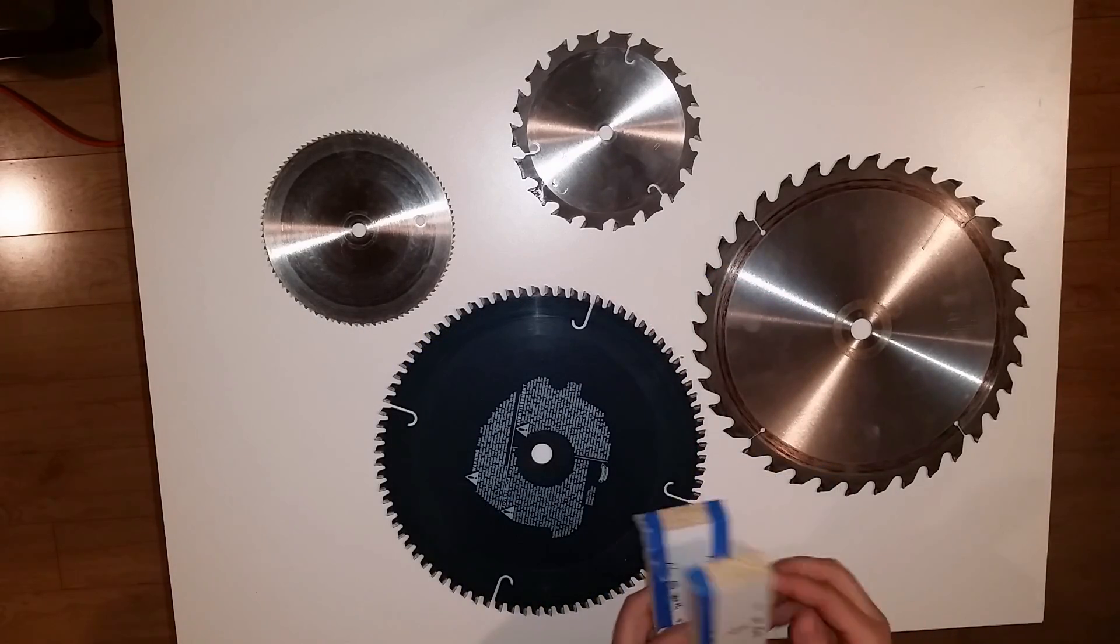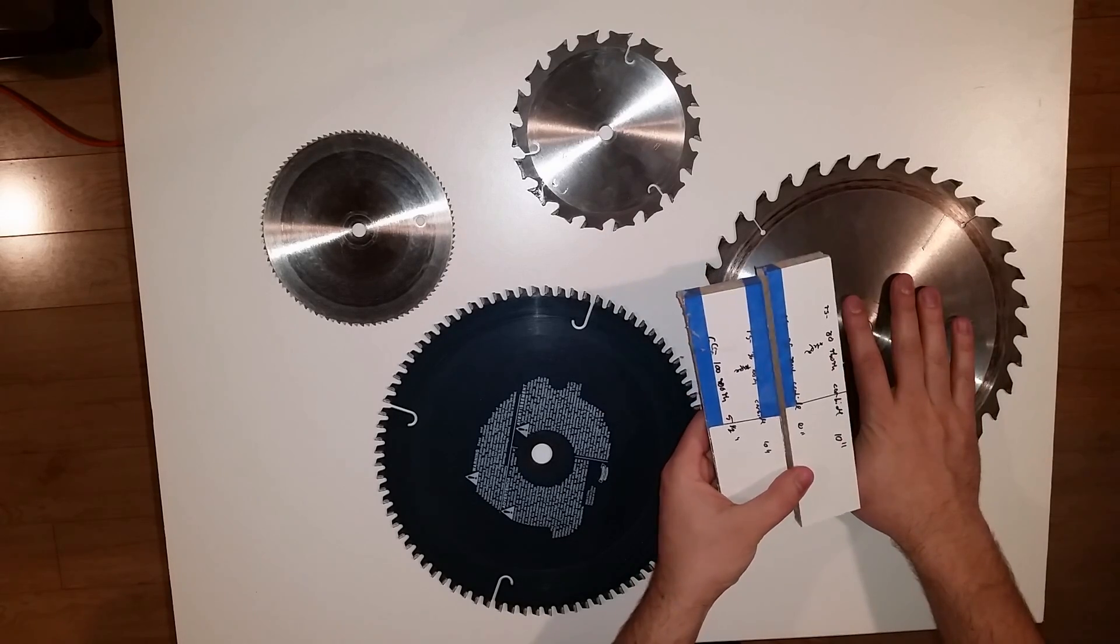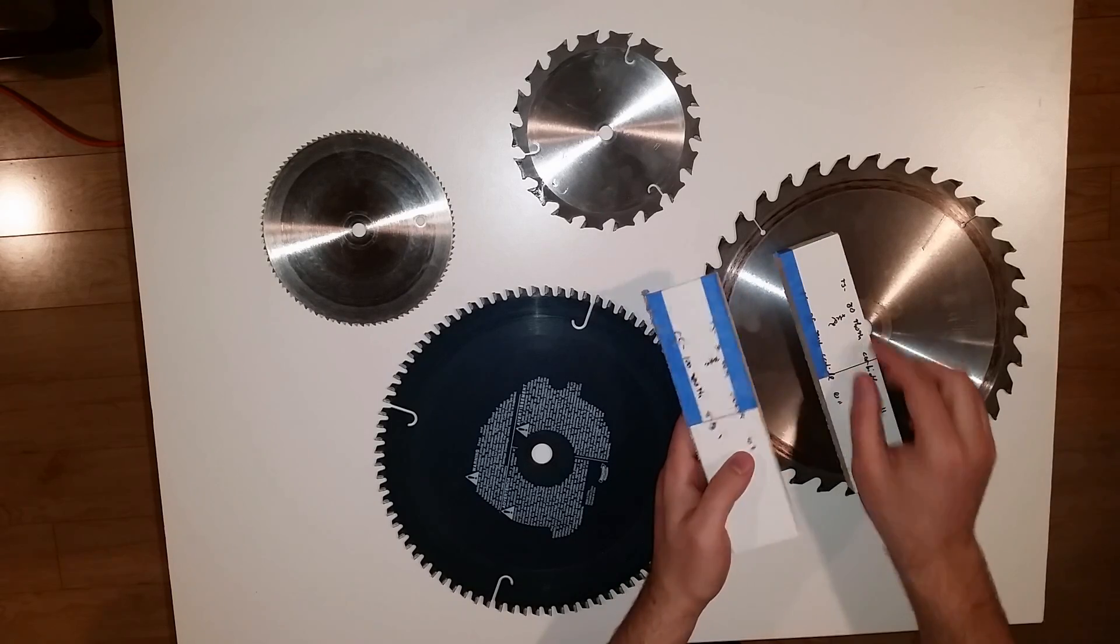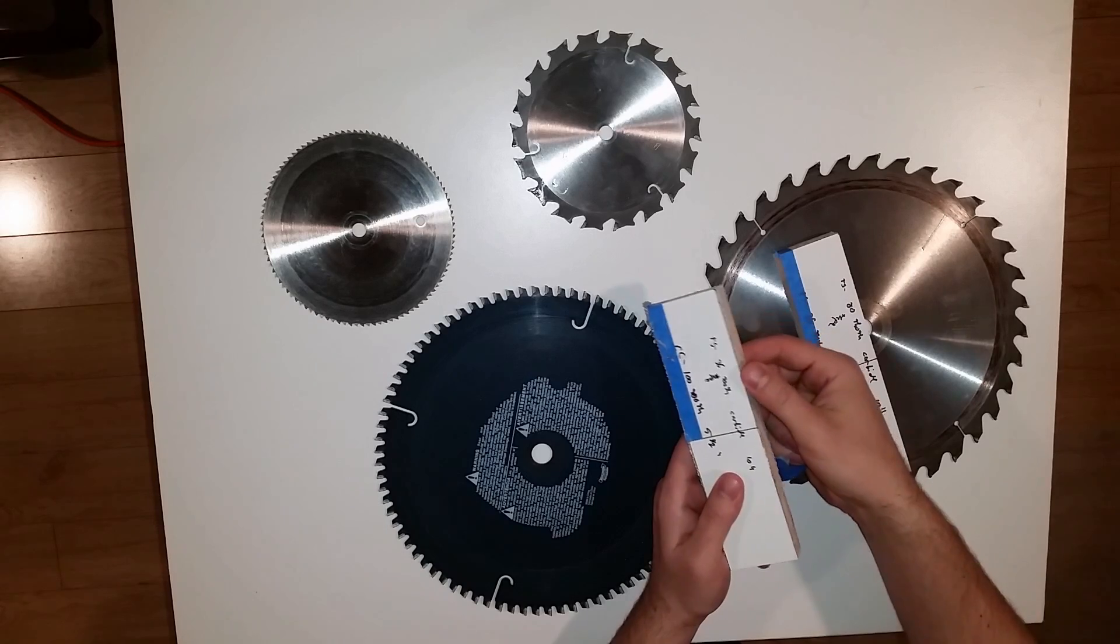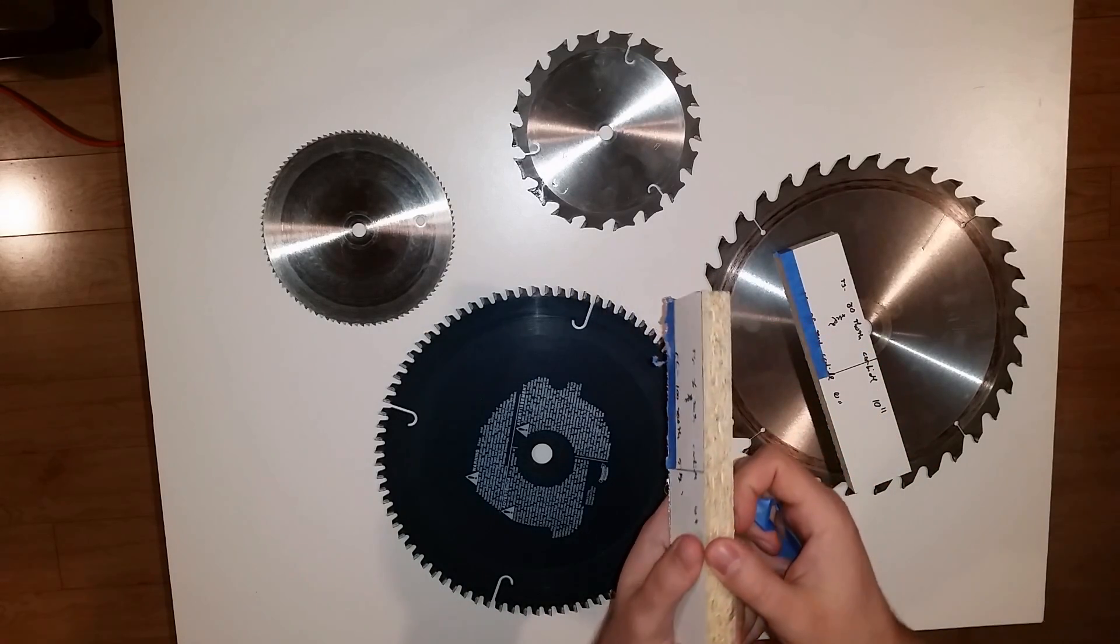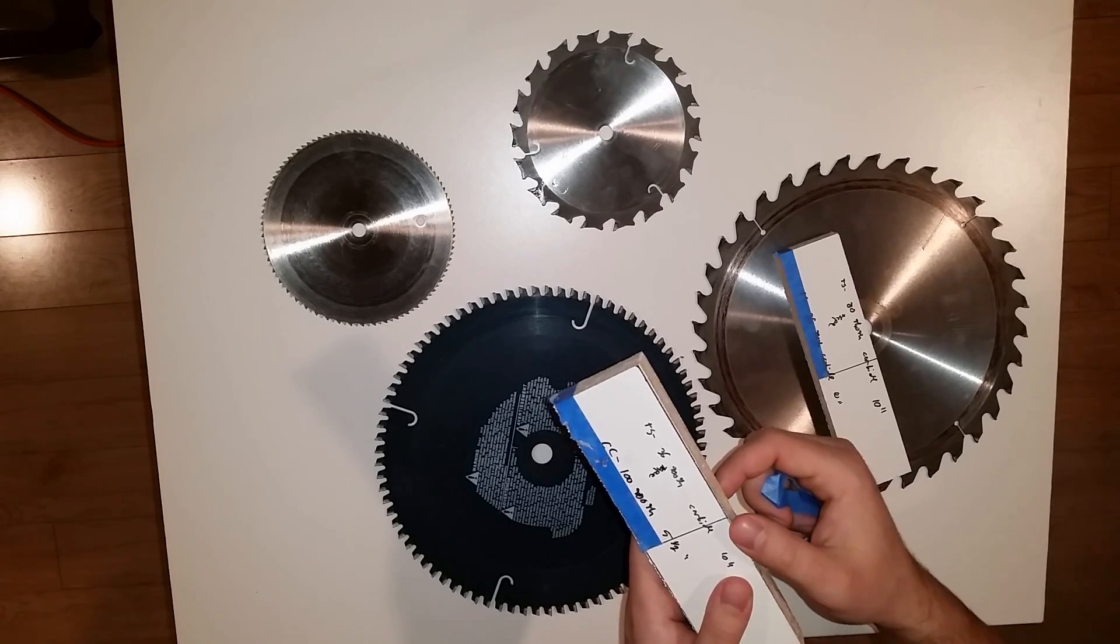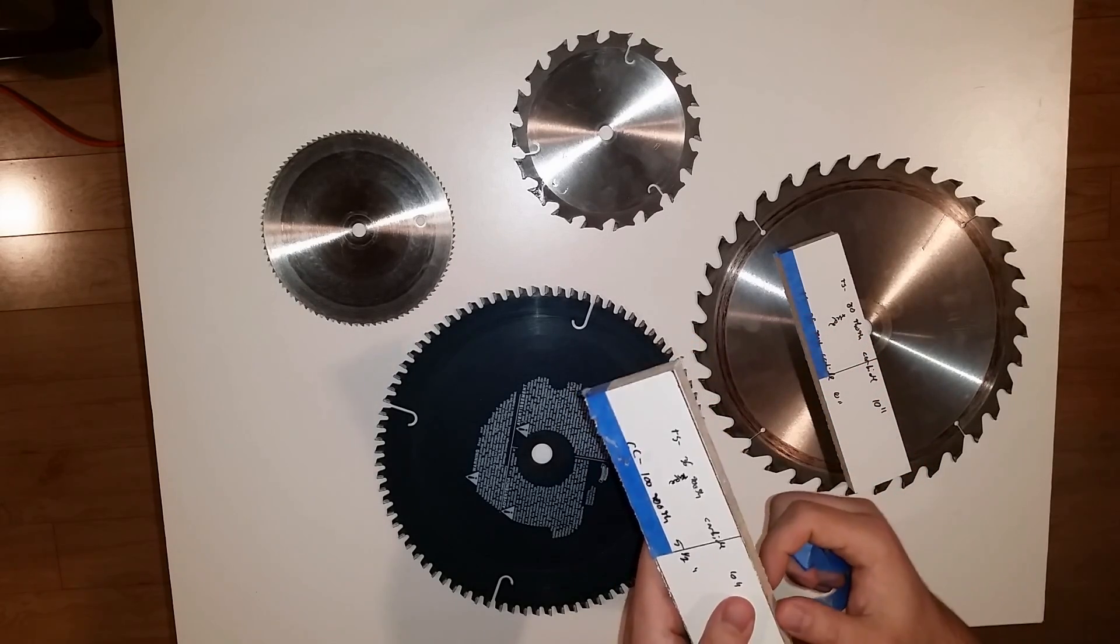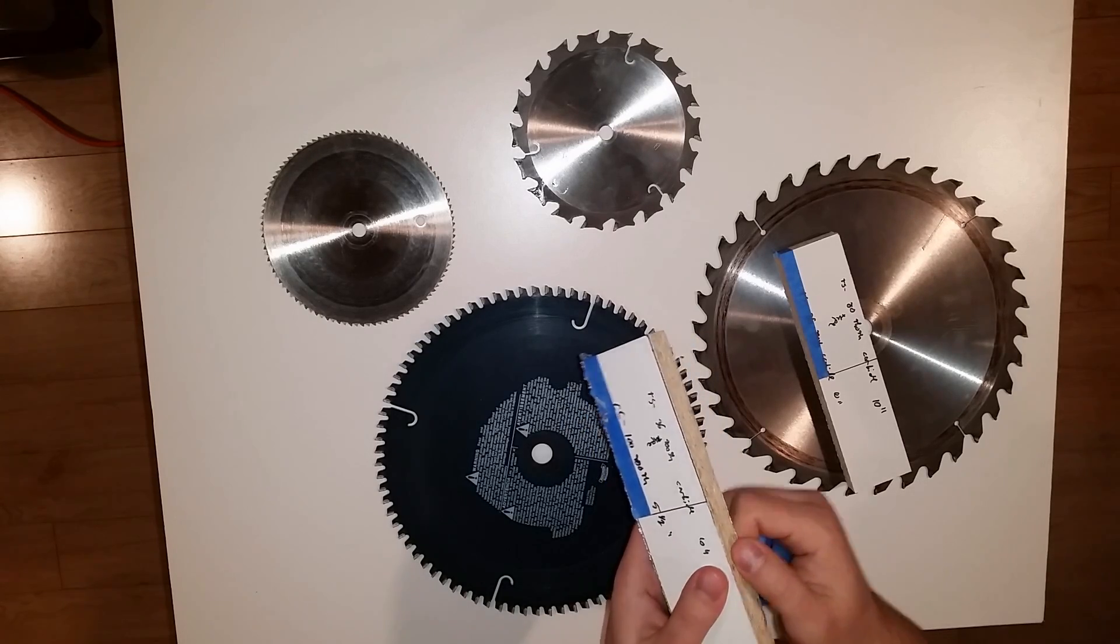Now when we compare that to the results from the 36 tooth general purpose blade, it actually did a decent job. You can see that the edges did lift a little bit but it didn't chip inwards. And the nice thing about that is you can just softly sand the edge and you can probably get quite an acceptable finish from this.